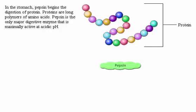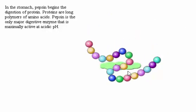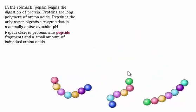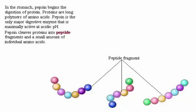Proteins are long polymers of amino acids. Pepsin is the only major digestive enzyme that is maximally active at acidic pH. Pepsin cleaves proteins at bonds between the amino acids tyrosine and phenylalanine, producing peptide fragments and a small amount of individual amino acids.